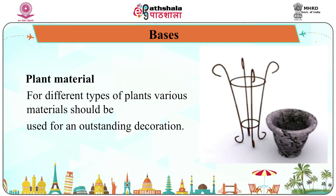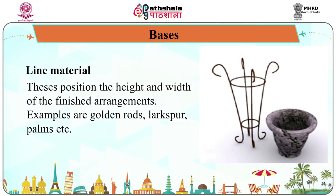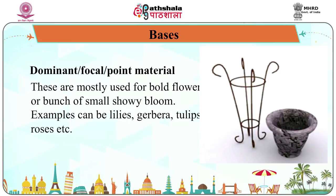Within plant material used as base, there are several types. Line material positions the height and width of finished arrangements; examples include golden rods, larkspur, and palms. Dominant focal point material consists of bold flowers or bunches of small showy blooms; examples include lilies, anthurium, gerbera, tulips, and roses.